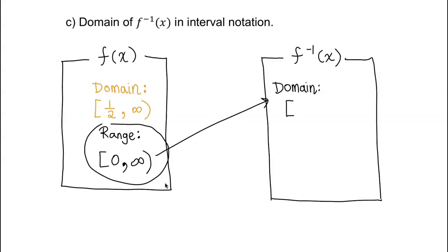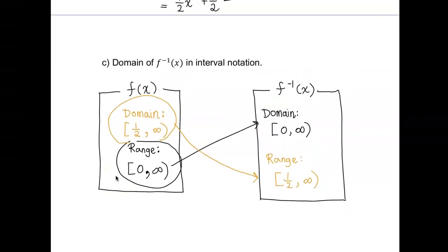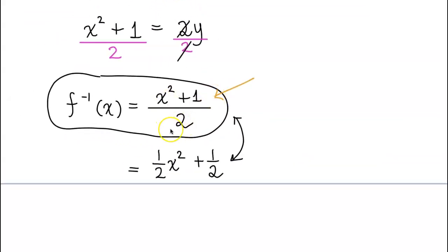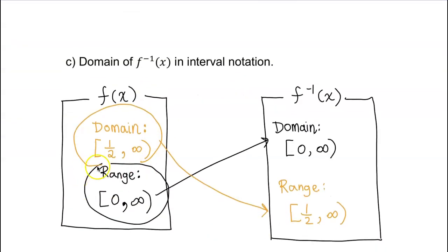The domain of f inverse is 0 to infinity. To find the range of the inverse function, it's simply the domain of the original function. That's why I found the range of f(x) earlier — so we wouldn't mistakenly say the domain of the inverse is all real numbers. The domain of f inverse in interval notation is [0, ∞).